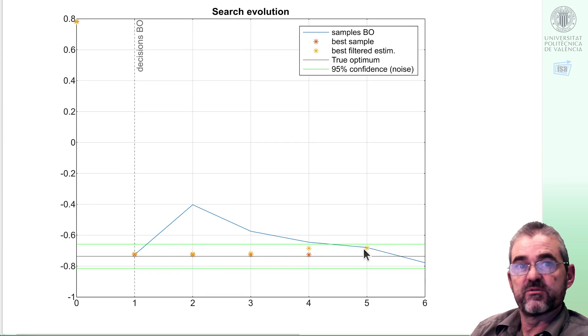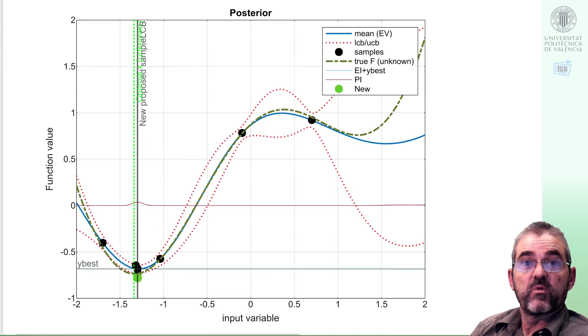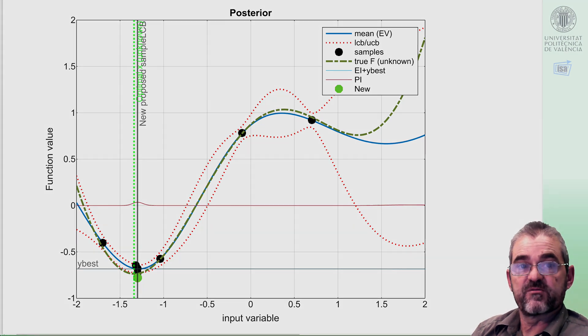So in this video we have looked at the code and we have discussed the behavior of probability of improvement, expected improvement, and lower confidence bound as acquisition functions, and behavior was reasonably good because the prior and the true function were in strong agreement. Subsequent videos will discuss other situations in which behavior is not that good, but for brevity we end this video here. Thanks for watching you.